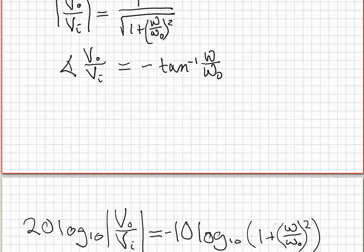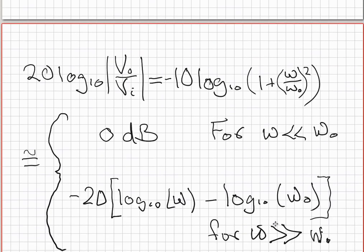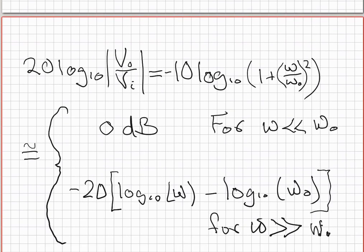We can further simplify this expression for the magnitude by looking at what happens to this term in the logarithm when omega is much much larger than omega zero or when omega is much much less than omega zero. Let's start out when omega is very small compared to omega zero. If you do that, you end up with approximately minus 10 log of one, because one is much larger than omega over omega zero squared.